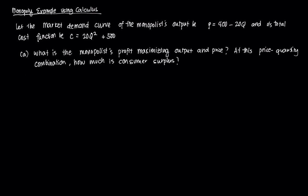Suppose we have a market demand curve for the monopolist's output being p = 400 - 20q, and a cost function that the monopoly faces of C = 20q² + 500.